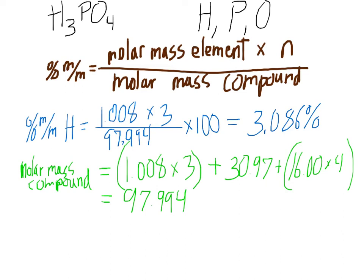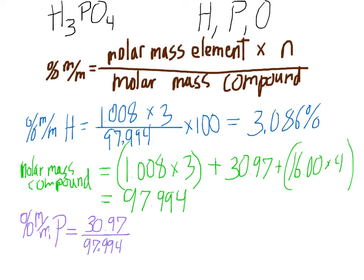Now for phosphorus: the percent by mass of phosphorus equals the molar mass of phosphorus, 30.97, times 1 — since there's only one — divided by 97.994, times 100. That turns out to be 31.61%. That makes sense because phosphorus weighs a lot more than hydrogen.